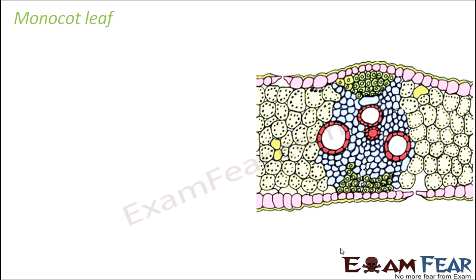Now let us look at a monocot leaf. There is nothing very different in case of a monocot leaf — things are almost similar. So let us see what the differences are.